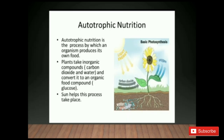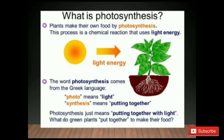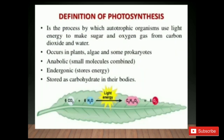Autotrophic nutrition is the process by which an organism produces its own food. Plants take inorganic compounds such as carbon dioxide and water and convert them to an organic food compound such as glucose. This process is known as photosynthesis. Photo means light and synthesis means putting together, so photosynthesis is the process by which autotrophic organisms use light energy to make sugar and oxygen gas from carbon dioxide and water.